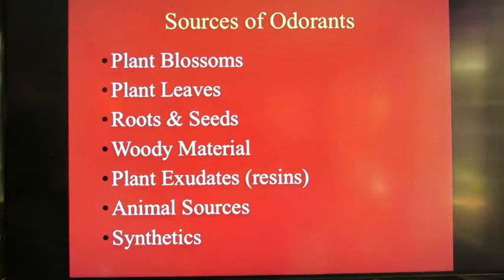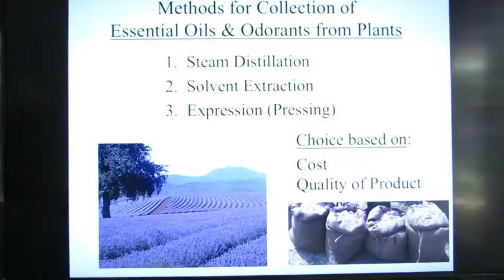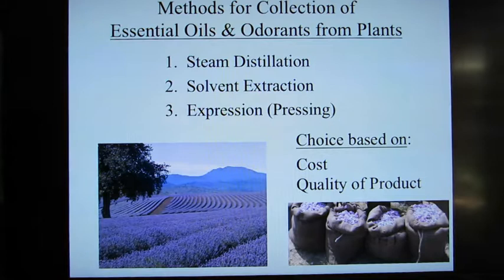The sources of essential oil odorants include plant blossoms, leaves, roots, seeds, woody material, plant exudates, animal sources, and synthetics. We'll go through a number of these in this series of lectures, but let's first look at the methods for collection of essential oils from plants.